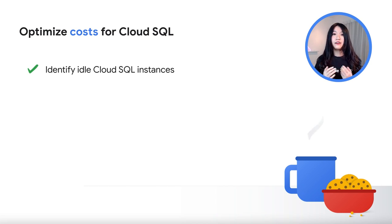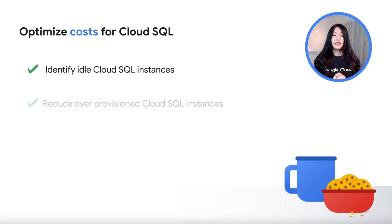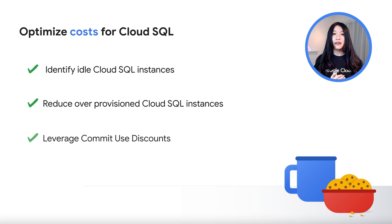For costs, the Cloud SQL Idle Instance Recommender helps detect instances that might be idle and provides recommendations on how to reduce costs. The Cloud SQL Over-Provisioned Instance Recommender helps detect instances that are unnecessarily large for a given workload and provides recommendations on how to resize them. Lastly, leverage committed use discounts, which are ideal for predictable workloads on a one-year or three-year basis and can give you significant cost savings.